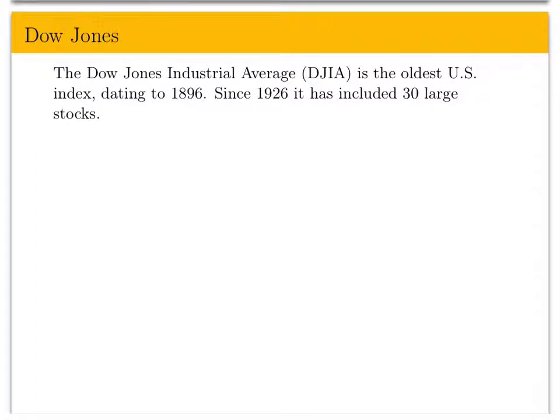Let's begin by talking about the Dow Jones Index. The Dow Jones Industrial Average, the DJIA, is the oldest US index dating back to 1896. Since 1926 it's been formed by 30 large stocks. Those stocks haven't been the same since 1926, but the index has always been formed by 30 large companies.